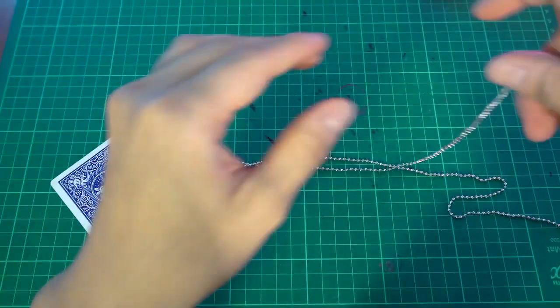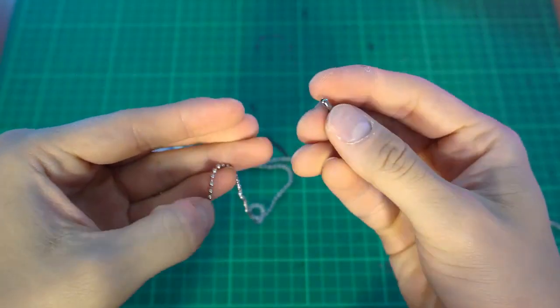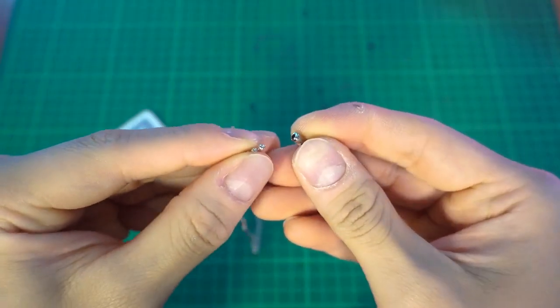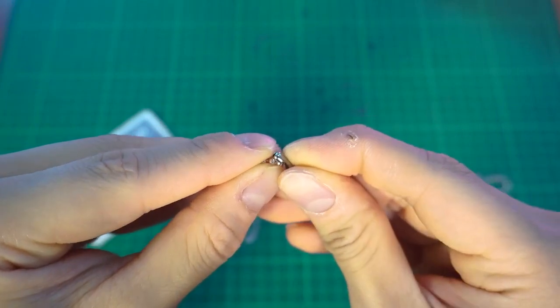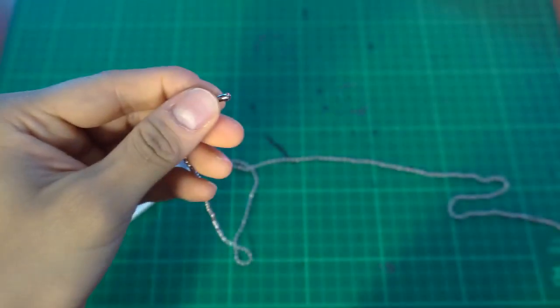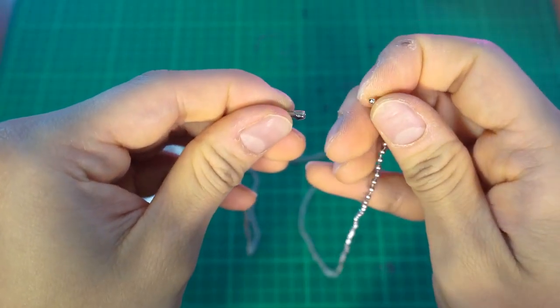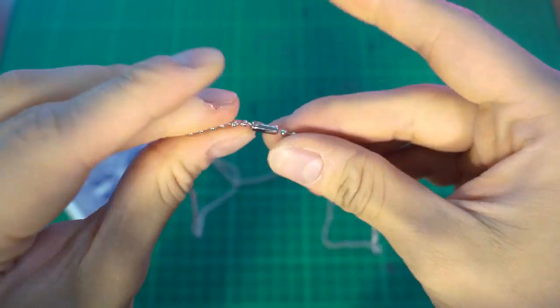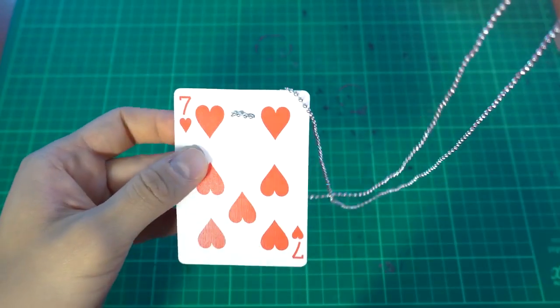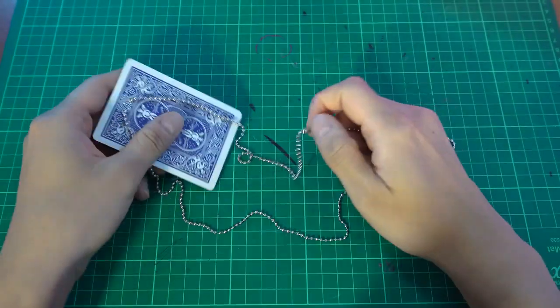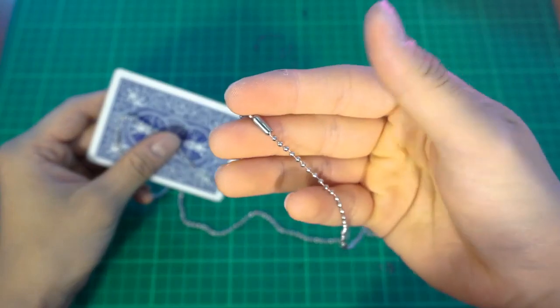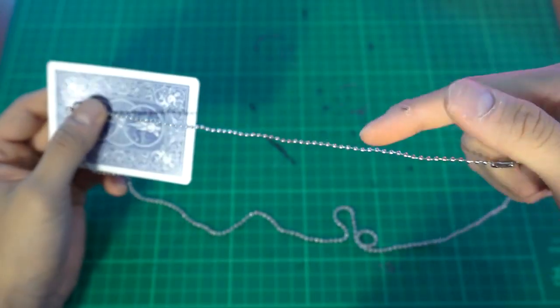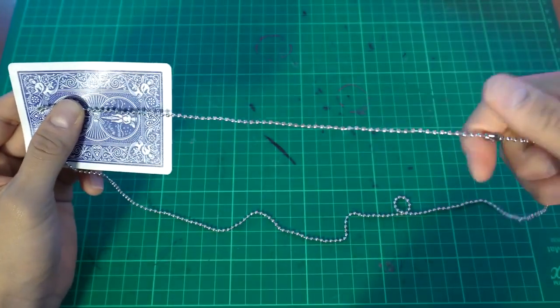Finally, just simply attach this hook onto the end of the chain. And this gimmick is complete. Finally, I like to adjust the hook so that it is somewhere on the center of the chain.